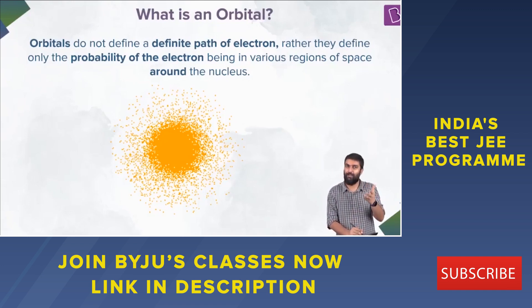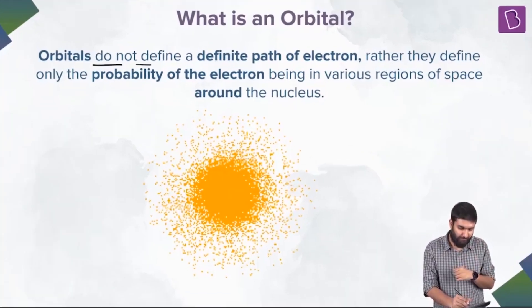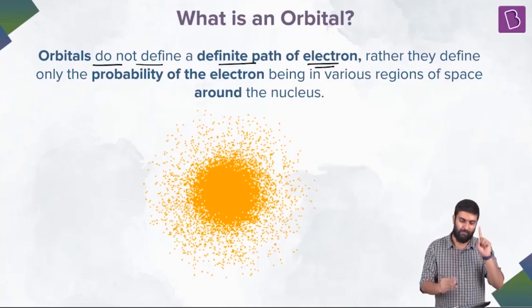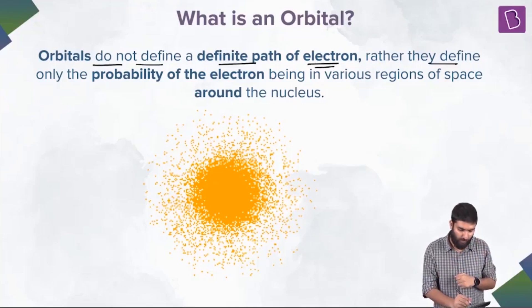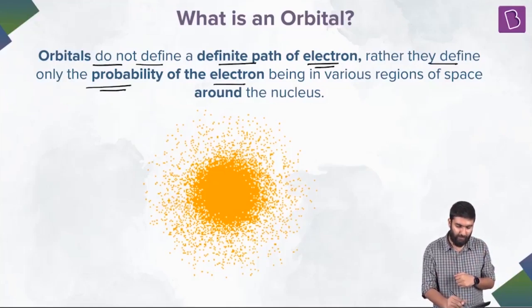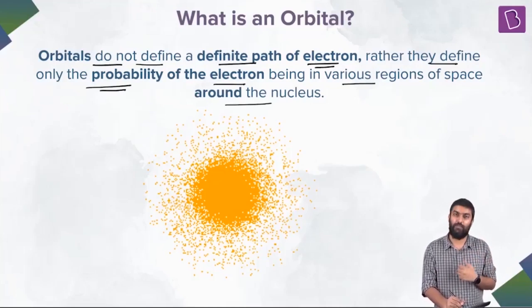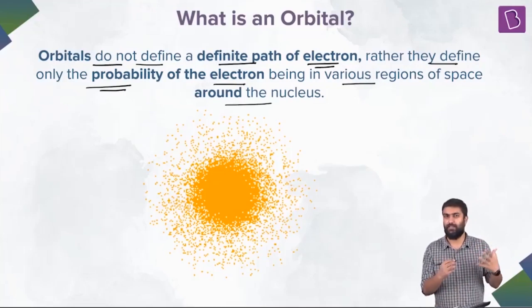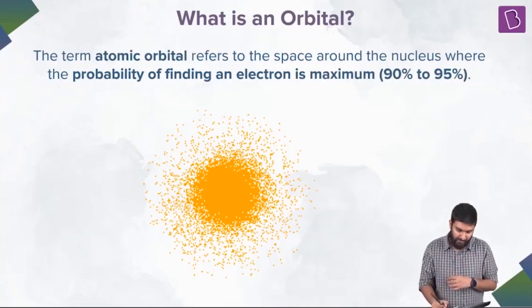Orbitals - first, before we define an orbital, let's agree on what an orbital is not. Orbitals do not define a definite path of electron. Rather, they define only the probability of the electron being in various regions of space around the nucleus. I think that is self-explanatory.